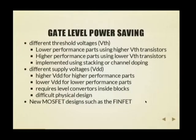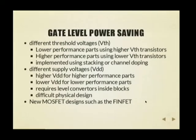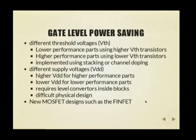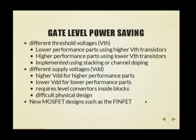So what can we do at the MOSFET level to actually save power? One thing you can do is have different threshold voltages. Not all the MOSFETs in the chip have to have the same threshold voltage. Parts of the chip which don't have to be very fast can be done with higher threshold voltage transistors, while parts which have to be fast — like your ALU or high-speed parts of the CPU — can be implemented using lower VT transistors, which are faster.